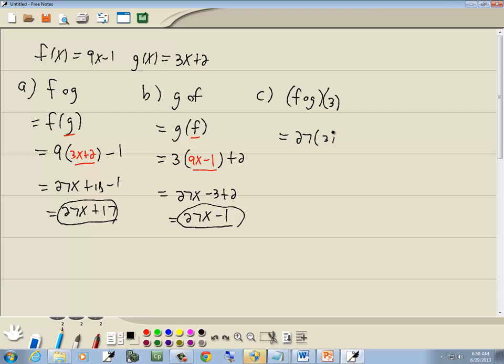So we've got 27 times 3 plus 17. That's 81 plus 17, which gives us 98. And those are our answers.